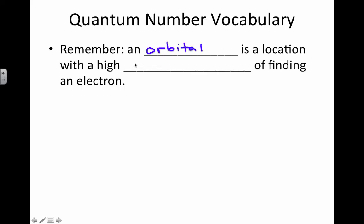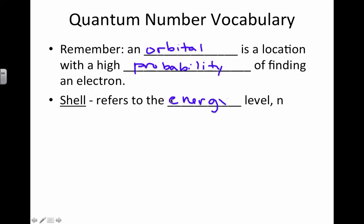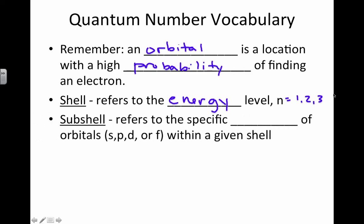An orbital is a location with a high probability of finding an electron. The shell that we speak of is referring to the energy level represented by n, and this is just a whole number. n can be 1, 2, 3, up to 7, and it could be more. We just don't have elements that hold that many naturally.